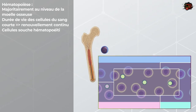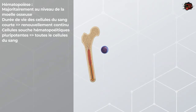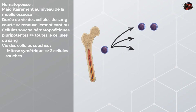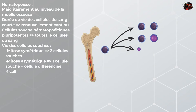Toutes les cellules du sang vont dériver de cellules souches hématopoïétiques pluripotentes. Ces cellules pourront connaître trois scénarios de vie différents. Le premier est une mitose symétrique, ce qui va résulter en deux cellules souches. La seconde possibilité est une division asymétrique, c'est-à-dire qu'on obtiendra deux cellules : l'une sera une cellule souche pluripotente comme la cellule mère, et la seconde se différenciera et perdra ainsi le potentiel de cellules souches. Le dernier scénario possible est une différenciation sans division cellulaire.